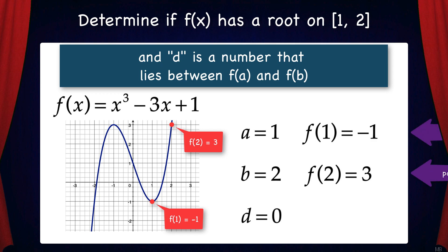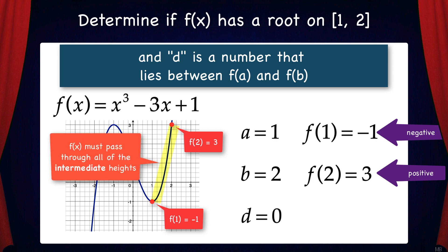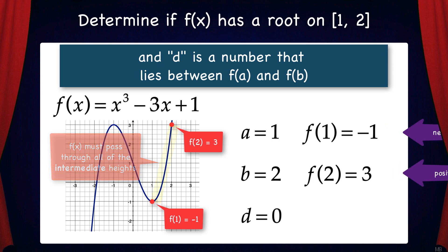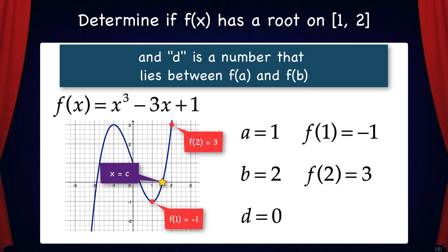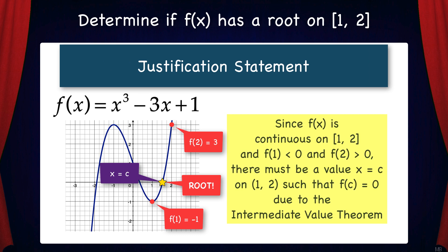Now we can see that f(1) is negative and f(2) is positive. Since the function is continuous, it has to pass through all of the intermediate heights between negative 1 and 3. Therefore, it must reach a height of 0 at some x value, which we call x equals c, and that means a root must exist on this interval. So we write: since f is continuous on the closed interval 1 to 2, and f(1) is less than 0 and f(2) is greater than 0, there must be a value x equals c on the open interval 1 to 2 such that f(c) equals 0, due to the Intermediate Value Theorem. So f must have a root on the interval 1 to 2.